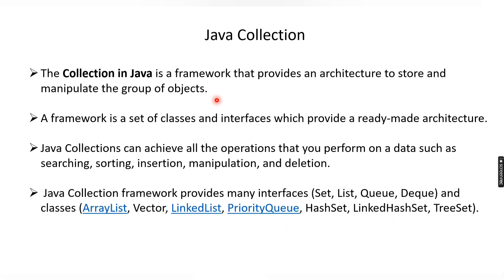Java collection framework provides many interfaces. Since it is a framework, it will have classes and interfaces. The different types of interfaces available inside Java collections are Set, List, Queue, and Dequeue. We are going to learn all these interfaces and classes in detail in the upcoming videos.